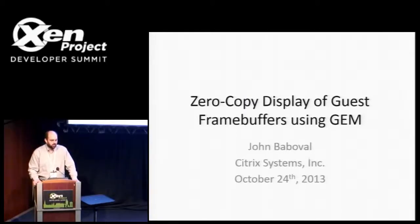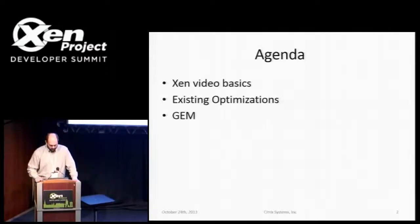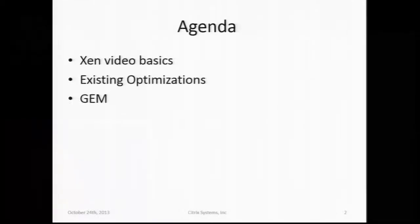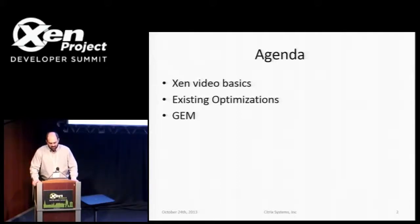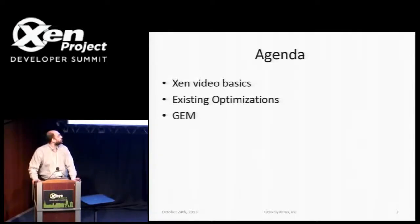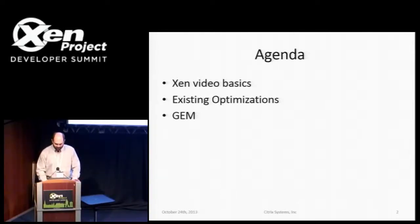I'd like to talk about removing copies from the display path. I'm going to go through a little bit of basic stuff — how bits get on the screen with Xen, some of the existing optimizations that are already in the path, and how we can use GEM to help. There's not a lot of time in this session, so some of the stuff is going to be a little bit boiled down.